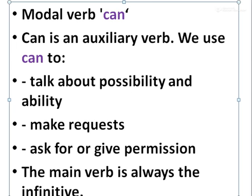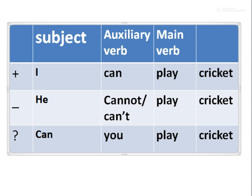Modal Verb Can: 'can' is an auxiliary verb. We can use 'can' to talk about possibility and ability, make requests, and ask for or give permission. The main verb is always the infinitive. In positive form: I can play cricket — here 'can' is an auxiliary verb. In negative form: he cannot, or can't, play cricket.